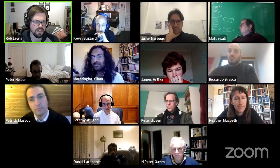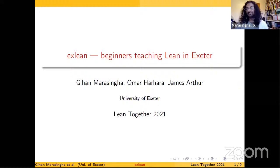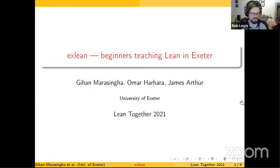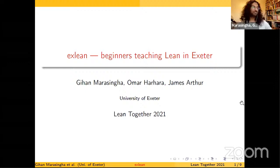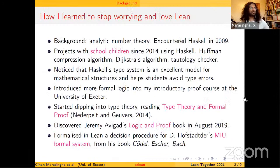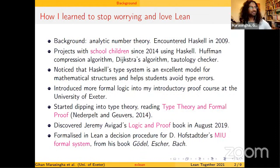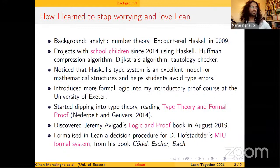So we've got XLean: beginners teaching Lean in Exeter, because we're all kind of beginners. There's me and I've got some undergraduates helping out — there's Omar and James. What's my background? Analytic number theory. A colleague at the University of Bristol showed me this thing called Haskell, which I thought was quite fun. I thought I'd do some projects with school children using Haskell — we looked at the Huffman compression algorithm, Dijkstra's algorithm, and a tautology checker. I thought Haskell seems to be really good for helping students understand mathematics, and certainly you're not going to make type errors — I see so much with students thinking of sets as being the same as propositions, for instance thinking that union of two sets is the same as a disjunction.